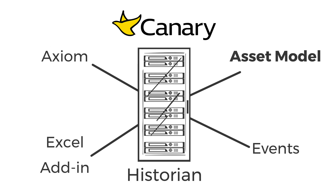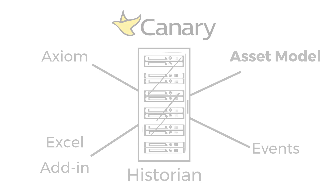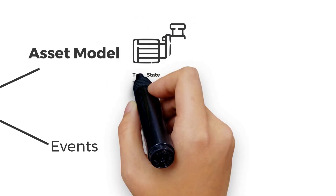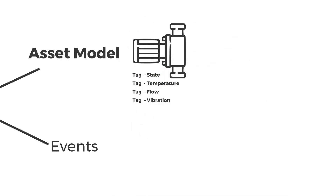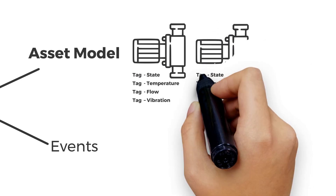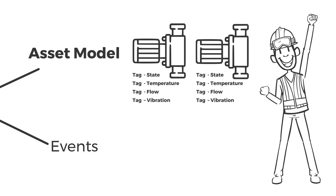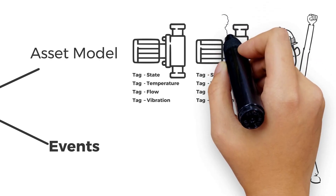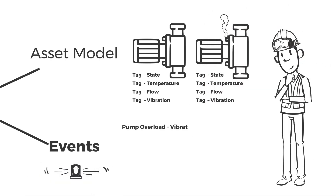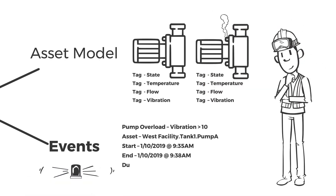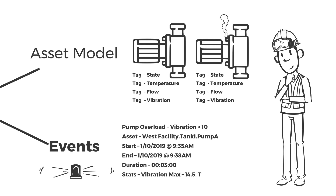Most organizations want to analyze their data by asset type. Canary makes it easy to do this using their asset model. By creating templates, tags are grouped into assets and auto-discovered when a new asset comes online. Once identified, assets can then be monitored using Canary Events. Guided by rules based on tag values, Canary tracks your asset's health, even alerting you when an event has begun.